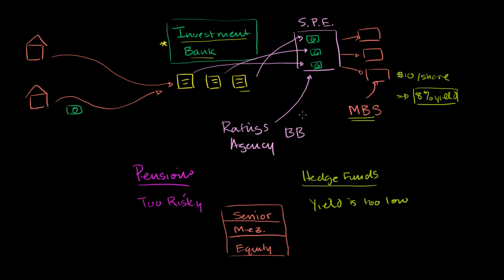And the way it works, in a mortgage-backed security, everyone gets paid the same amount. In this situation, when you split it this way, the holders of the senior tranche securities are going to get paid first. Only when they're made whole are the owners of the mezzanine tranche securities going to get paid. And only when they are made whole will the owners of the equity tranche security get paid.